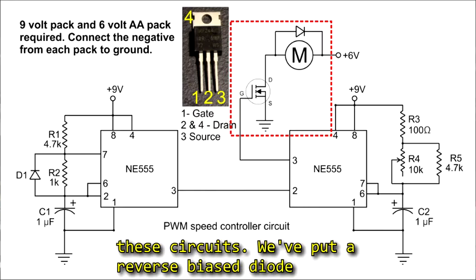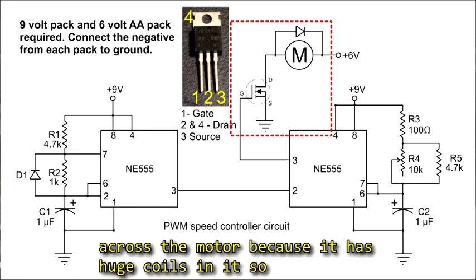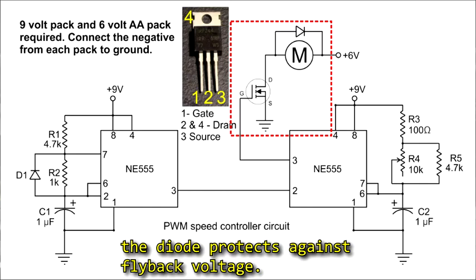We've put a reverse biased diode across the motor because it has huge coils in it, and so the diode protects against flyback voltage.